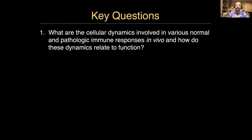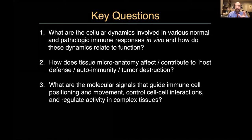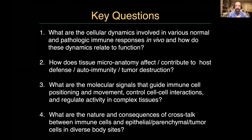We'd like to look at the dynamics of normal and pathological responses in vivo and how that relates to function, how tissue microanatomy and the organization of secondary lymphoid tissue contributes to host defense but also disease, understand at a more mechanistic level the molecular signals that guide positioning and movement, and look at the nature and consequences of cross-talk between immune cells and parenchymal sites — very similar to what Mateo just talked about regarding hepatocytes versus hematopoietic cells in the liver.